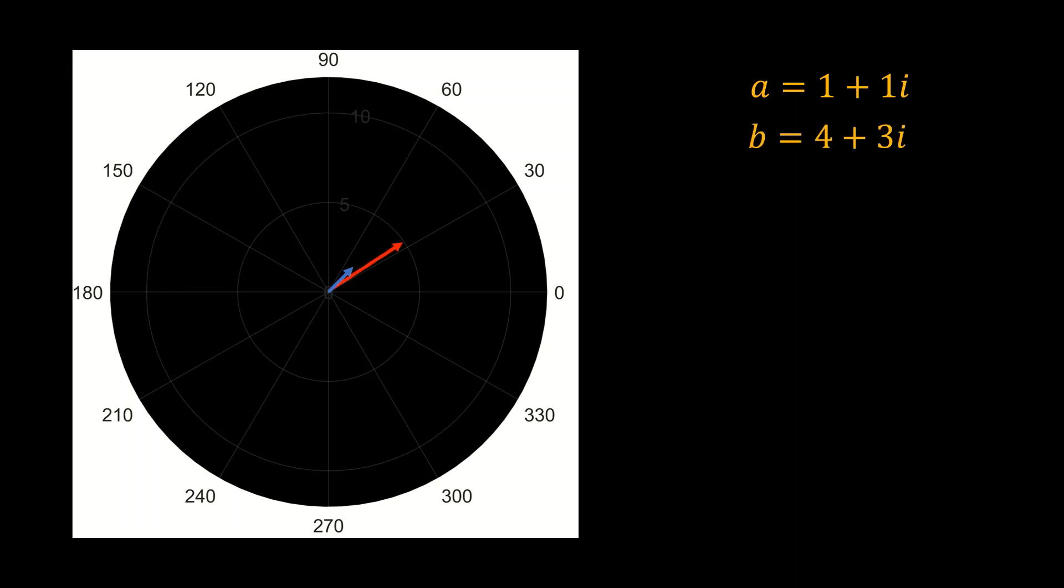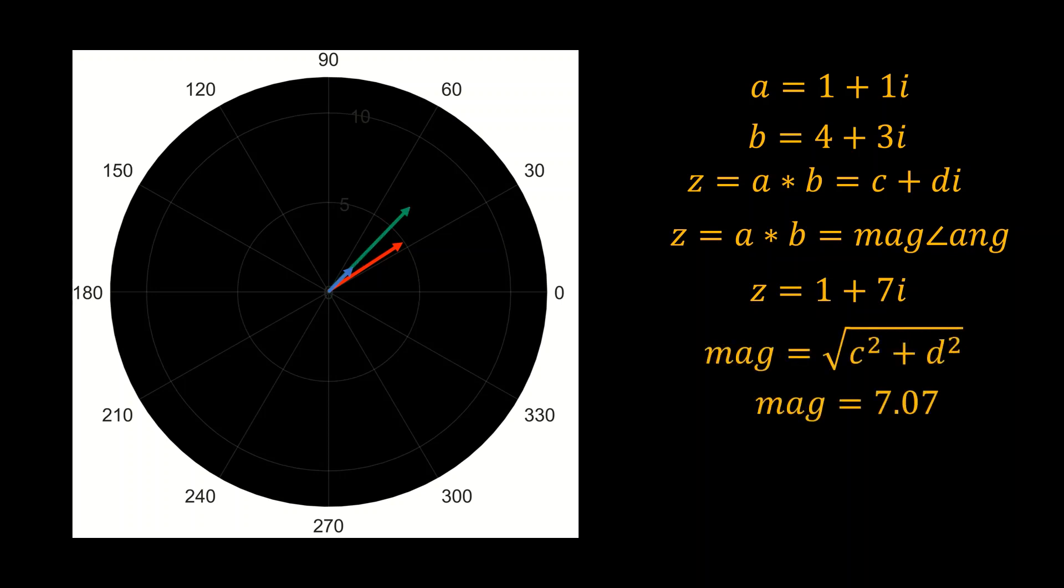Let's say one vector is 1 plus 1i, another vector is 4 plus 3i. The multiplication of both is given by this simple formula. The final answer is 1 plus 7i.